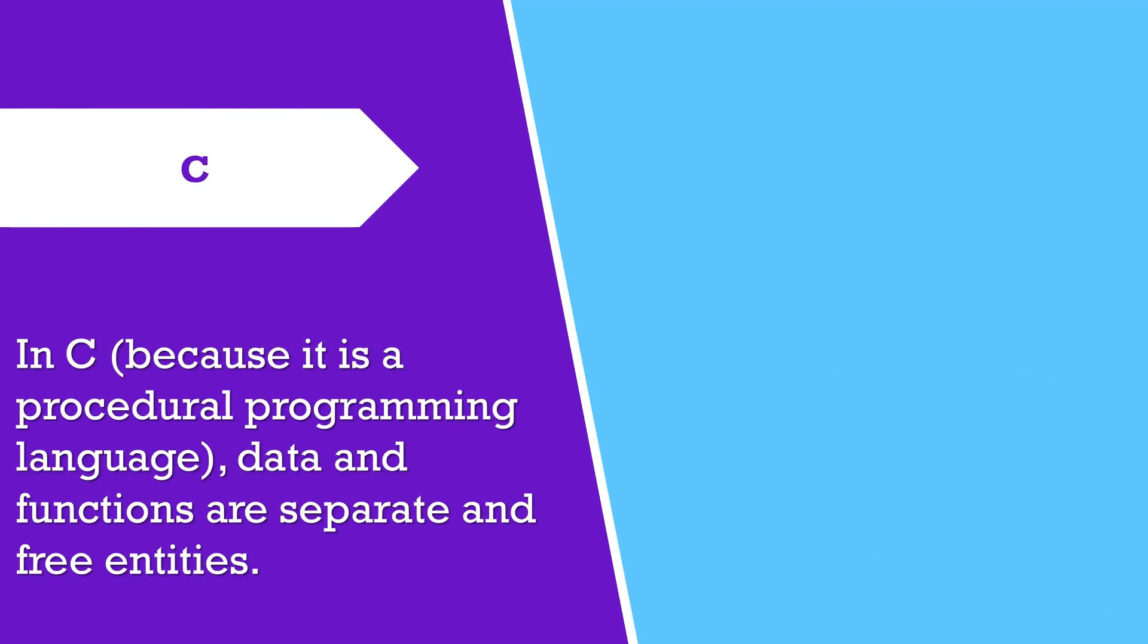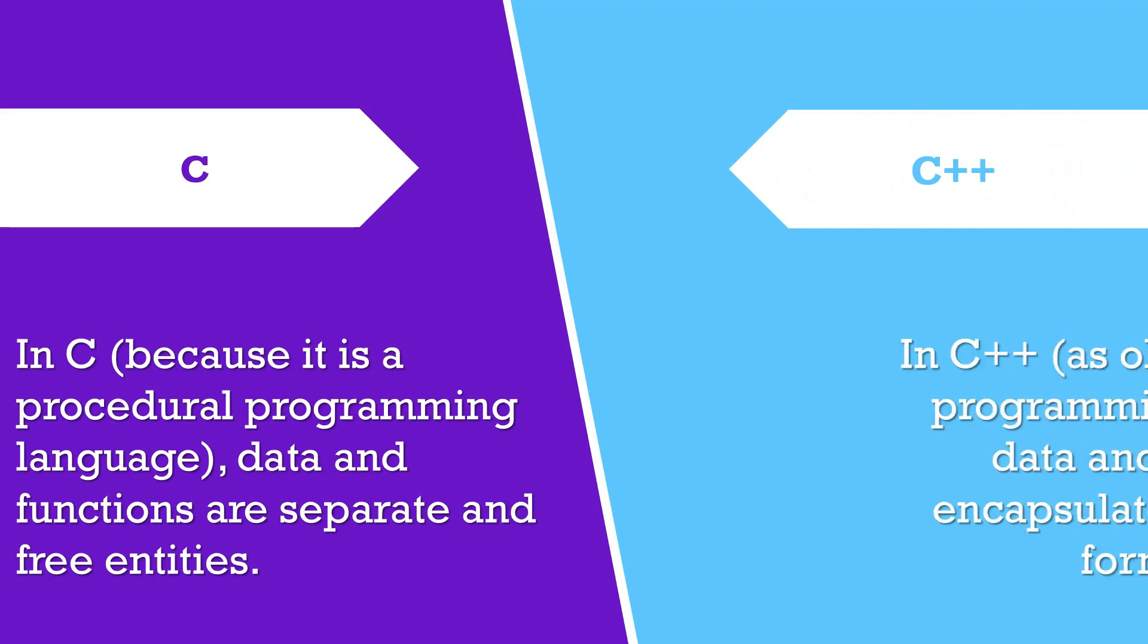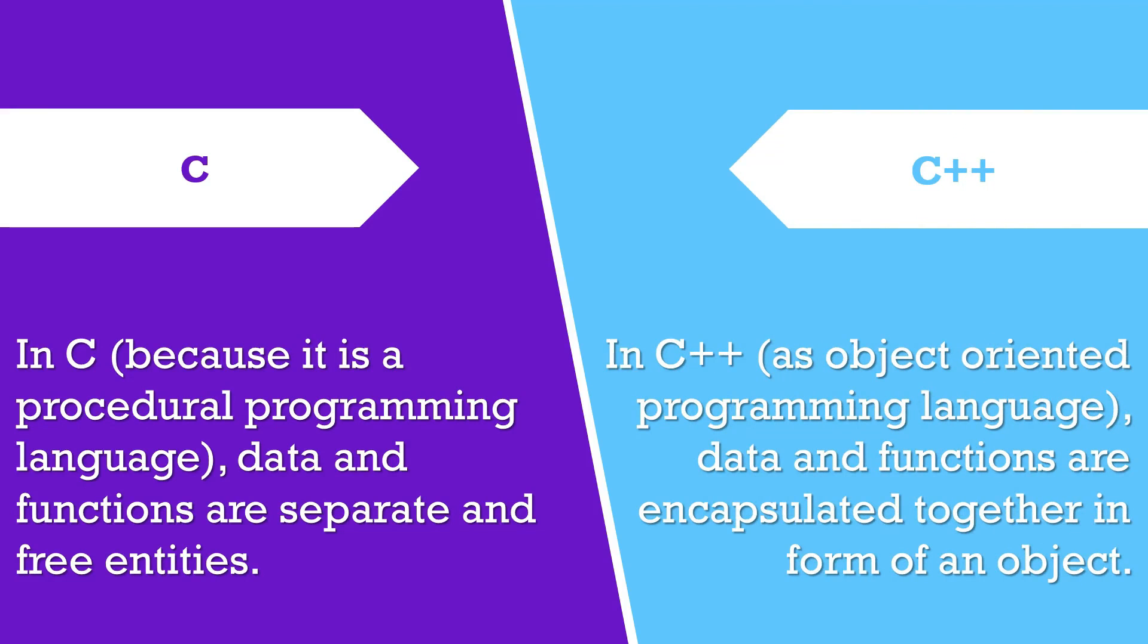In C, because it is a procedural programming language, data and functions are separate and free entities. In C++, as an object-oriented programming language, data and functions are encapsulated together in form of an object.